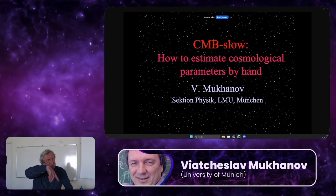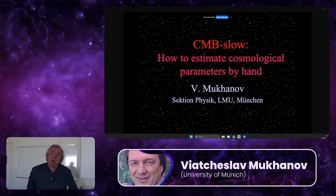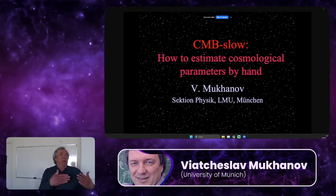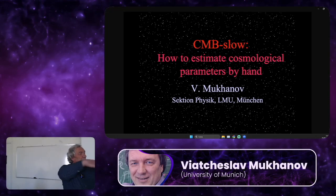After that I moved to Jadwin Hall. I decided to derive analytically the curves which people normally obtain on computers, using the so-called CMB fast code, which was invented at that time by Uros Seljak and Zaldarriaga. The idea was very simple: when people were writing computer programs, they were recalculating the whole sky at each moment of time. But they suggested integrating along the light ray, which reduced five-hour programs running for one set of parameters down to three minutes. It was a big invention.